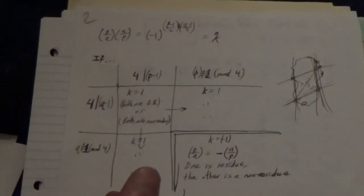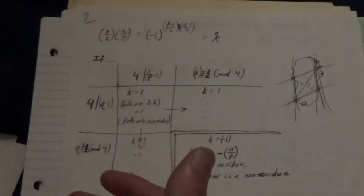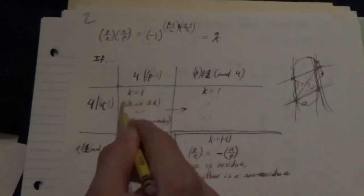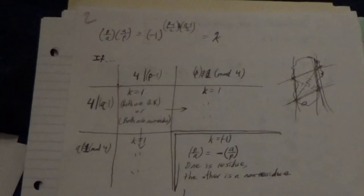So p is a quadratic residue modulo q if and only if q is a quadratic residue modulo p. They move together in that sense. If one is a quadratic residue, then so is the other, and if one is a non-residue, so is the other. And that's what we see in these three cases where at least one is congruent to 1 modulo 4. However,